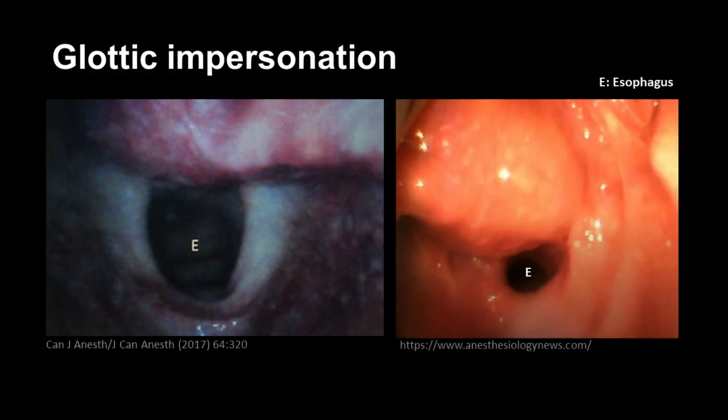These two figures are laryngoscopic views of the oropharynx during intubation. The openings labeled E are esophagus but can be mistaken for glottic openings. This misinterpretation, known as glottic impersonation, occurred as a result of a forceful laryngoscopic maneuver.